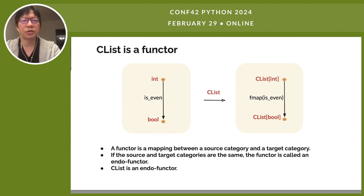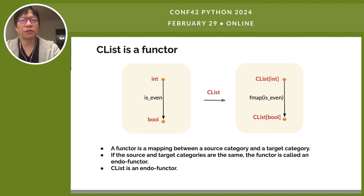If we put the isEven function and its lifted counterpart side by side, we can see that CList is actually a mapping from a source category to a target category. Such a mapping is called a functor if it satisfies certain properties. In our case, CList is a functor. The source category and the target category of CList are both the category of types. A functor is called an endofunctor when its source and target categories are the same.